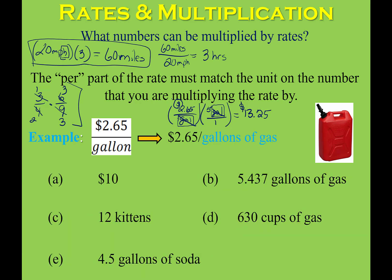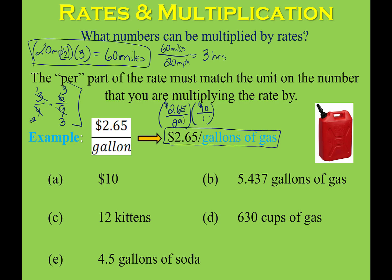So what can we multiply by $2.65 per gallon of gas? If we multiplied by $10, that wouldn't make sense — you'd get dollars squared, which is gibberish. There are times in physics and chemistry where you do multiply units together like that, but that's beyond Math 8 and even Algebra 1 for the most part. We're looking for the diagonal units to match so they cancel, leaving us with the top unit.